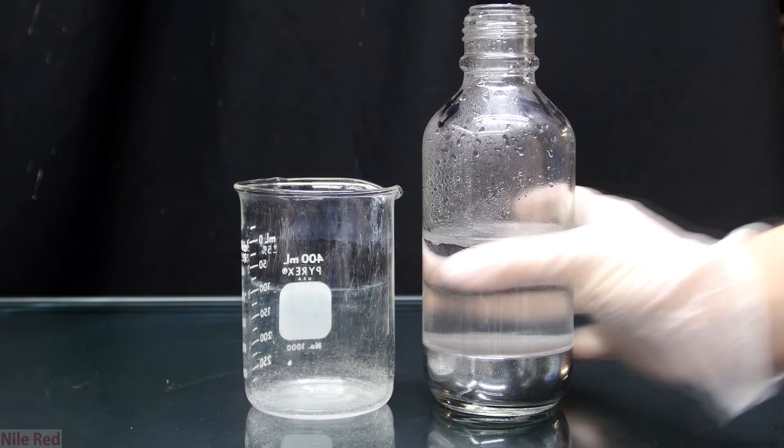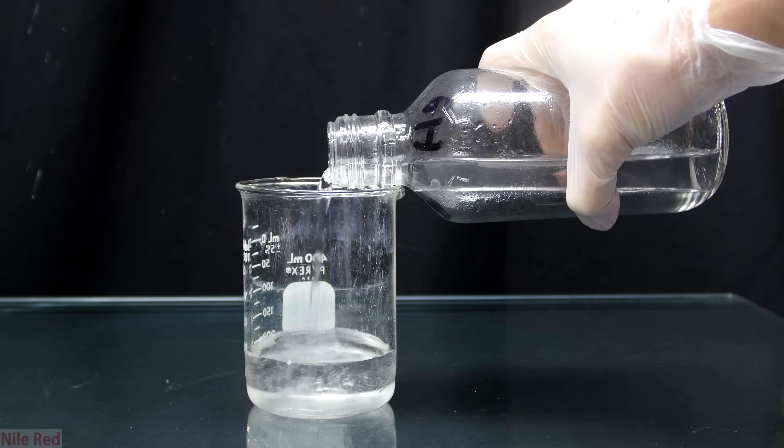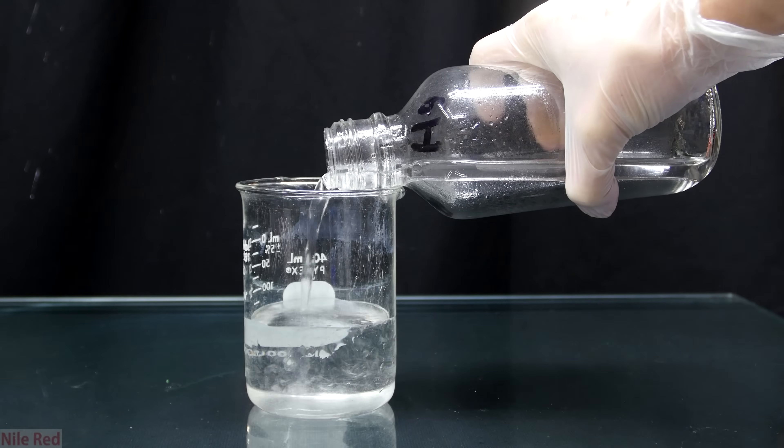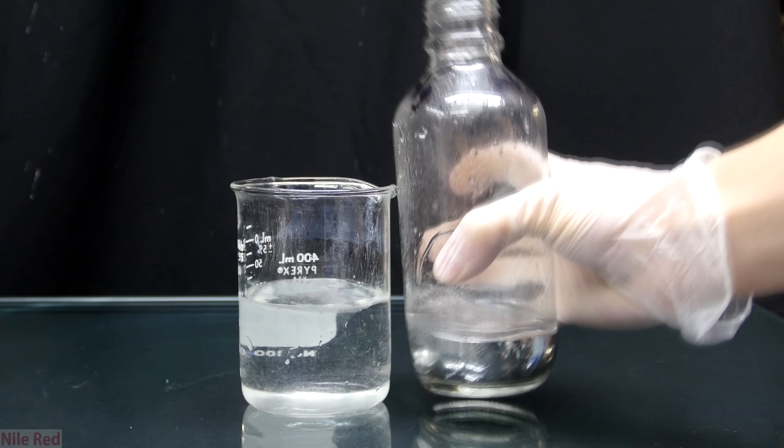The next thing I do is I open my mercury bottle and I pour out as much of the water oil mixture as I can. I want to get rid of as much of this as possible because it's really a waste of time to filter this through.